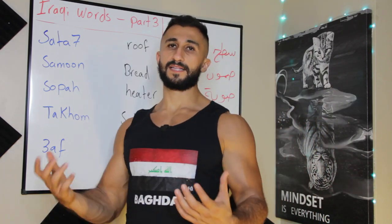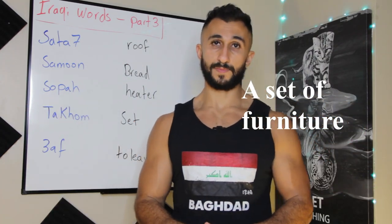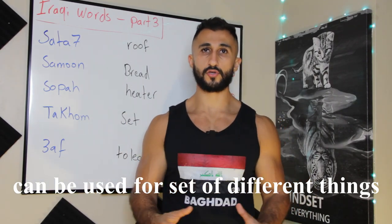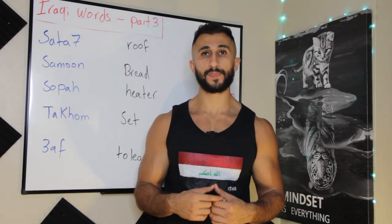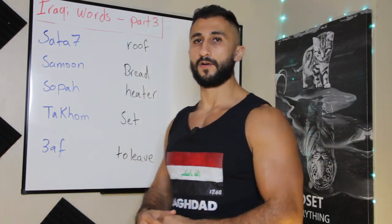The next word is 'tahum,' which means a set — like a furniture set or a matching set of items. You buy something as a set. I taught you plates in the previous lesson, Iraqi words in the kitchen — I'll leave a link. A plate is 'ma'un,' plates are 'mawa'in.' For example: 'anu ajabni tahum il mawa'in' — I liked the set of plates.